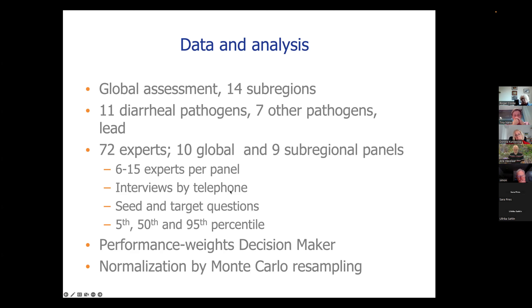All interviews were done by telephone. This was 2010 or something. So zoom and all that kind of stuff was not yet available. So a lot of telephone interviews, we did use seed and target questions. And we asked them for the fifth, the 50th and the 95th percentile. And in the end, the performance-based decision-maker was used and normalization in this case was done by Monte Carlo resampling. So just taking samples from the individual distributions, adding them up and dividing every sample by the sum of those samples across the pathways.